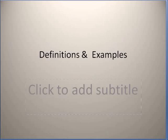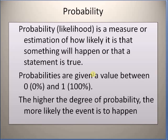Now let us look at some definitions and examples in statistics and probability. Probability can be defined as a measure or estimation of how likely a particular event is going to happen, or the likelihood that a proposition or statement is true. Probabilities are usually given values between 0 and 1 — 0 for no chance of occurring, or 1 for certainty. The higher the value of probability, the greater the chance of an event occurring.